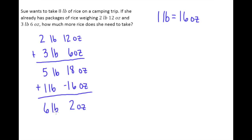That gives us a total of two ounces and six pounds, so we know that Sue has six pounds two ounces already. Now to figure out how much more she needs to pack, we need to find the difference between the eight pounds she wants and the six pounds two ounces she has.